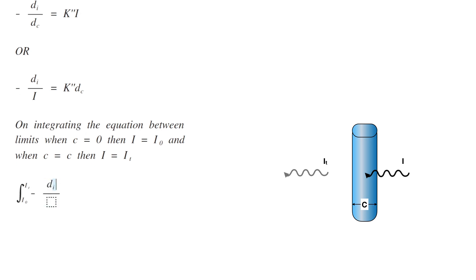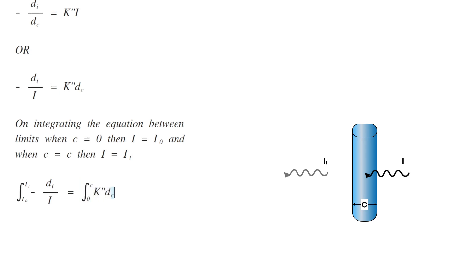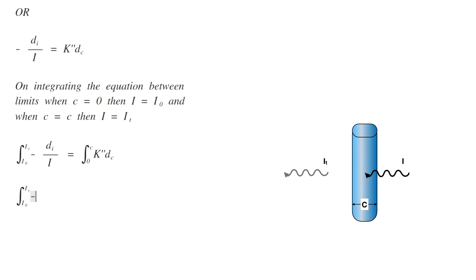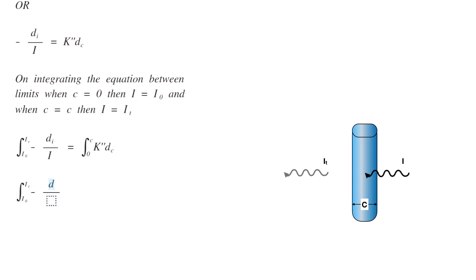Integration of minus dI by I in the limits between I0 to IT equals integration of K double dash dC between the limits 0 to C. As K double dash is a constant, we can take it out. So, integration of minus dI by I from the limit I0 to IT equals K double dash integration of dC from the limit 0 to C.